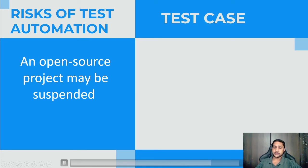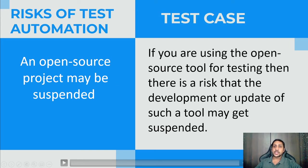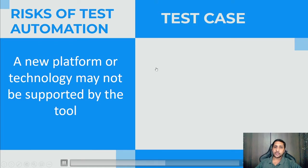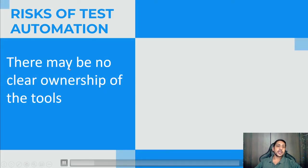An open source project may be suspended. If you are using an open source tool for testing, there is a risk that development or updates of the tool may get suspended. Also, a new platform or technology may not be supported by the tool — you may have a license for the next five years, but after one year the technology changes and those changes are not supported by the tool you purchased.